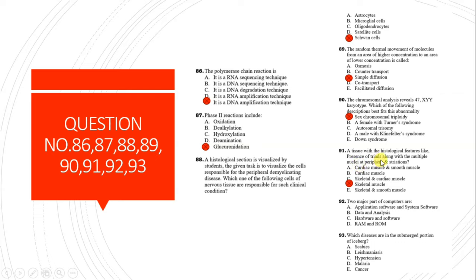Question 92: Two major parts of a computer are hardware and software. Question 93: Which diseases are in the submerged portion of the iceberg? This is from community medicine. From the options - scabies, leishmaniasis, hypertension, malaria, or cancer - hypertension is the correct answer as the disease submerged in the iceberg.